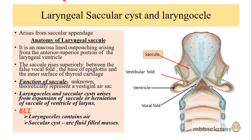Another type of congenital laryngeal cyst is the laryngeal saccular cyst, and a similar origin of the cyst is the laryngocele. These laryngeal saccular cysts and the laryngocele both arise from the saccular appendage.